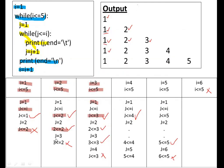You have to practice this manually — then only you will get a clear idea. Instead of five, make it six or four, do the calculation, and you will never forget what a while loop, for loop, or nested loop is.